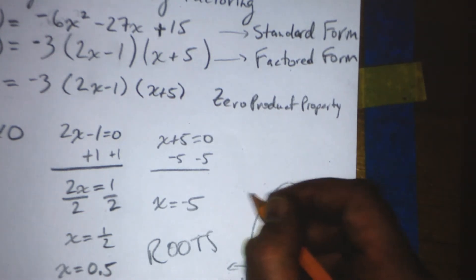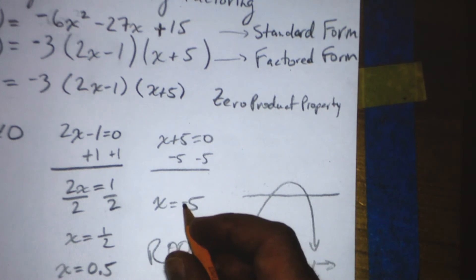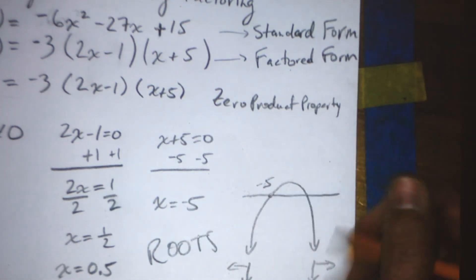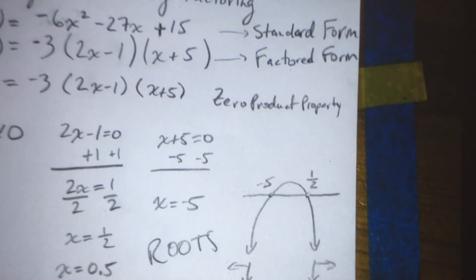And it has roots at, well, the root on the left is x equal negative 5, and the root on the right is x equals 0.5, or 1 half.